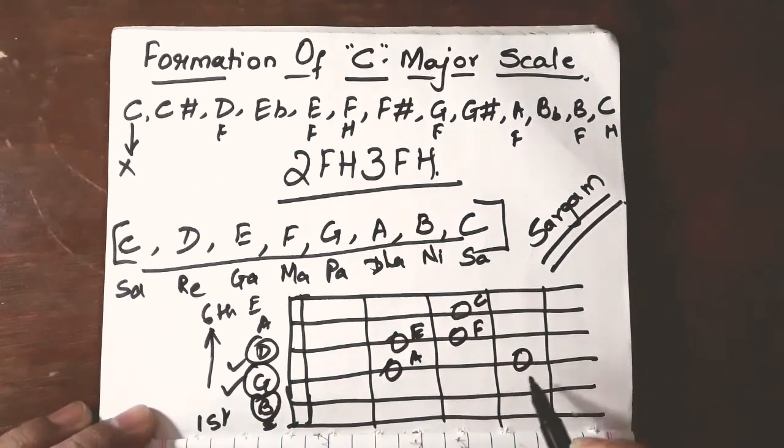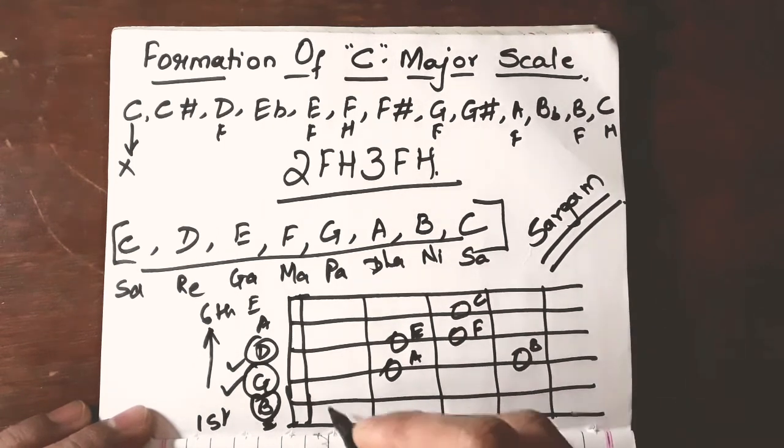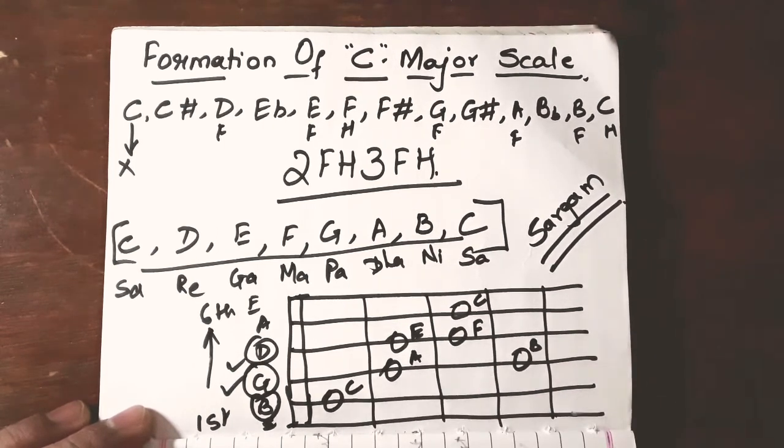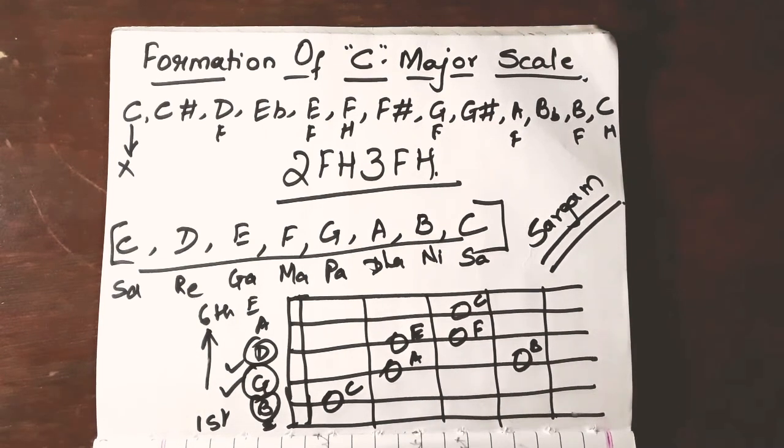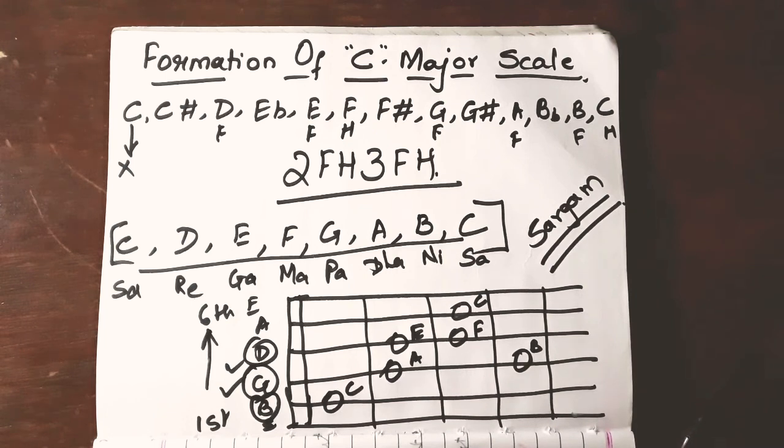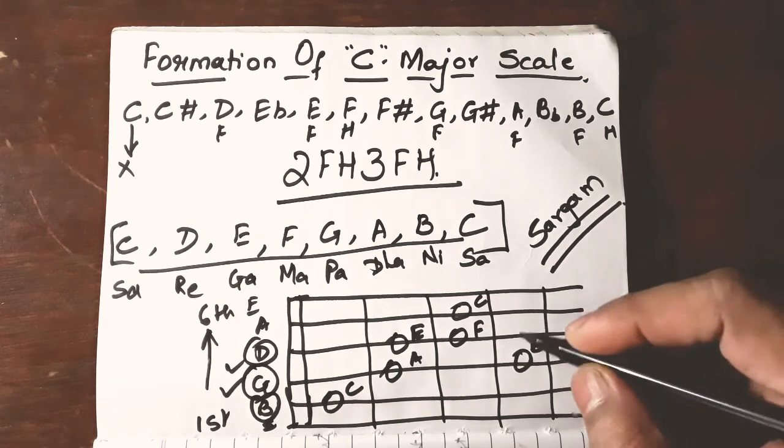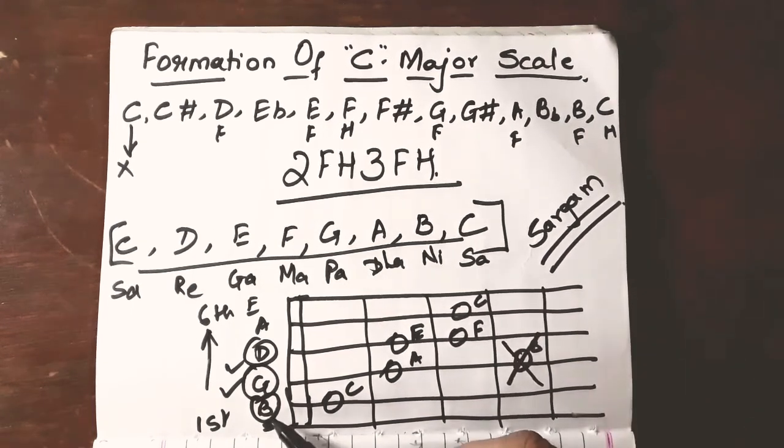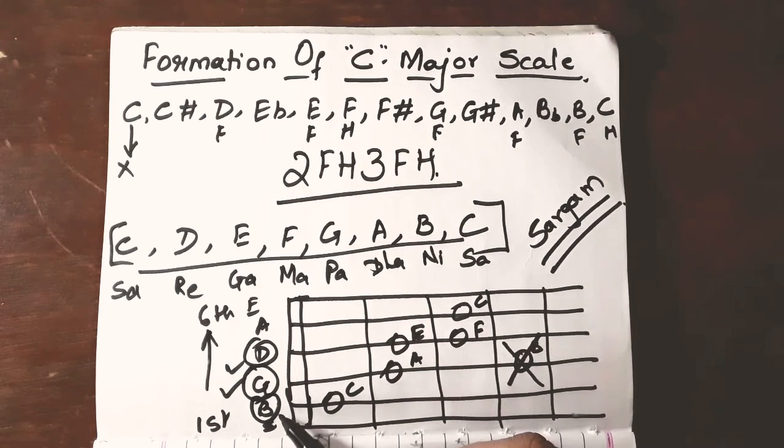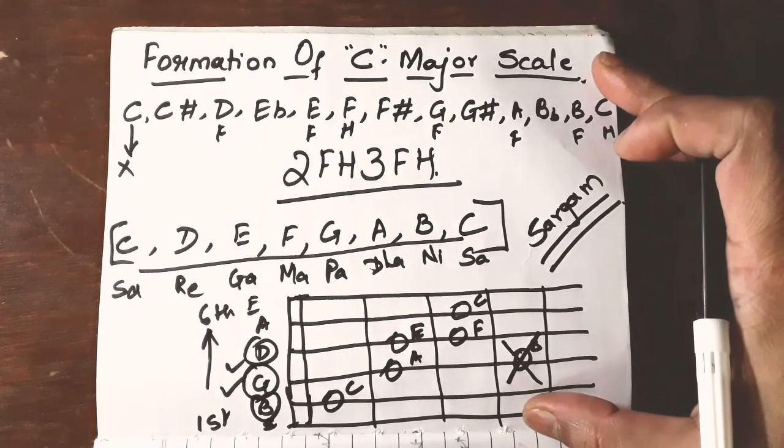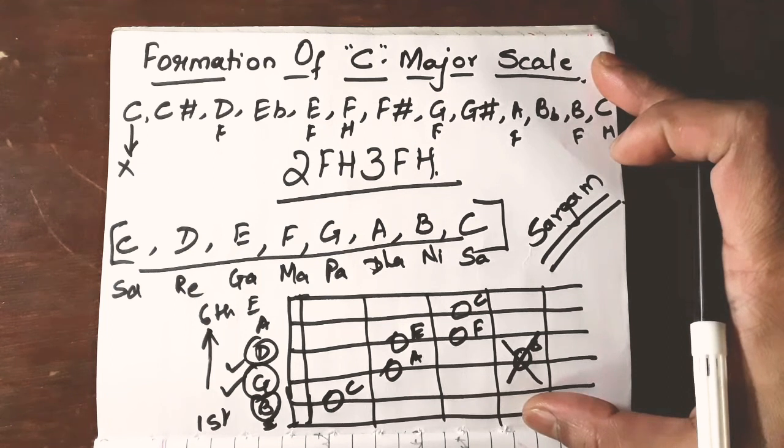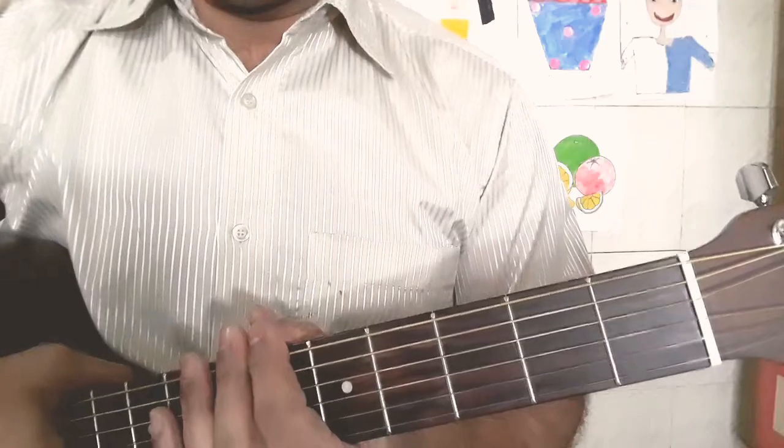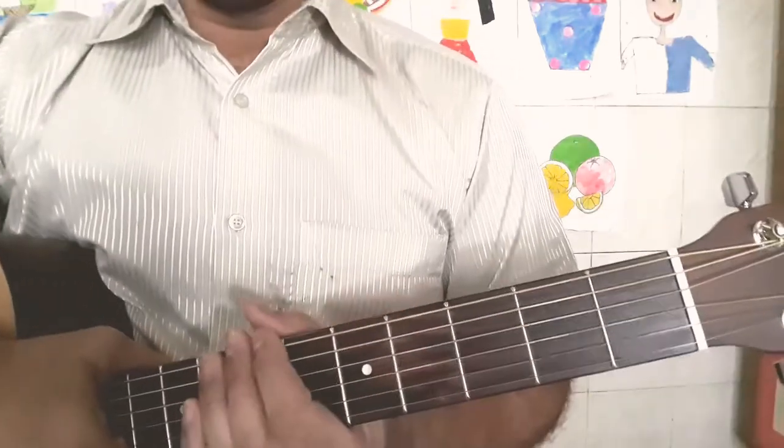So, you can choose any one B from here and here. So this is B and then again C. So, this is the layout of notes of C major scale on the first 4 fret of guitar. For the time being we will ignore this and we will use this B. Now, let us check out this on our guitar in the practical session.